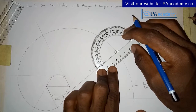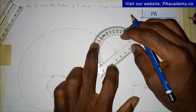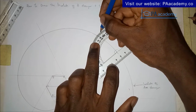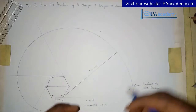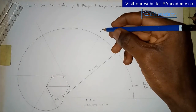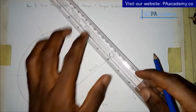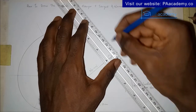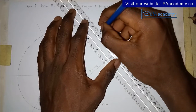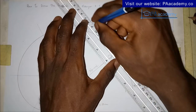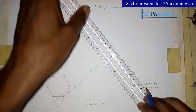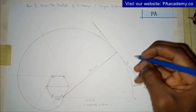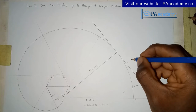Make sure the protractor is properly placed — that's why I'm taking my time. Mark 90 degrees, and draw the line through that point. This line represents the tangent.